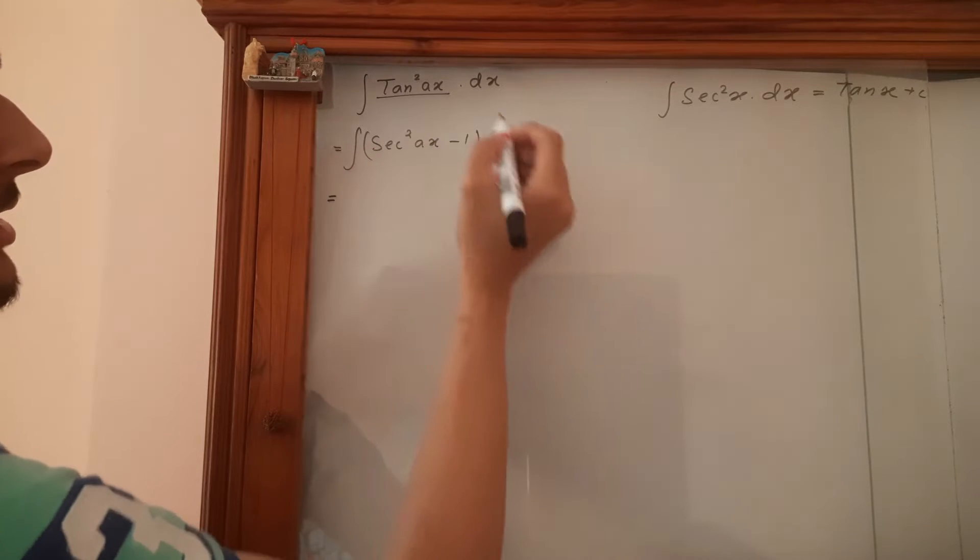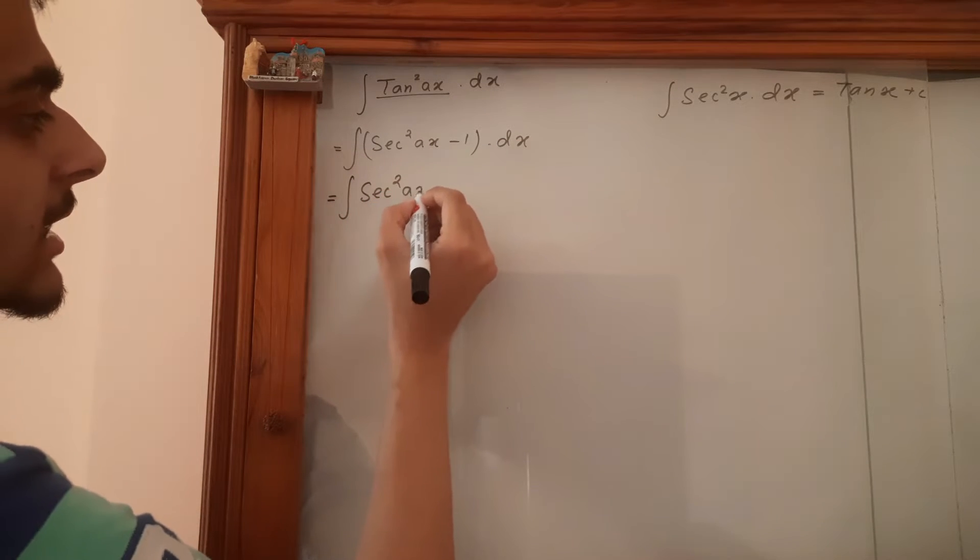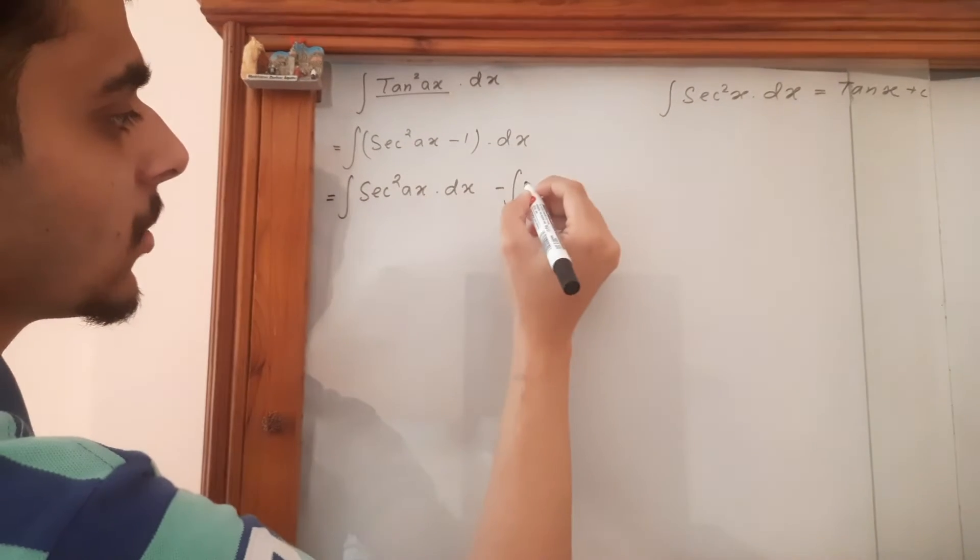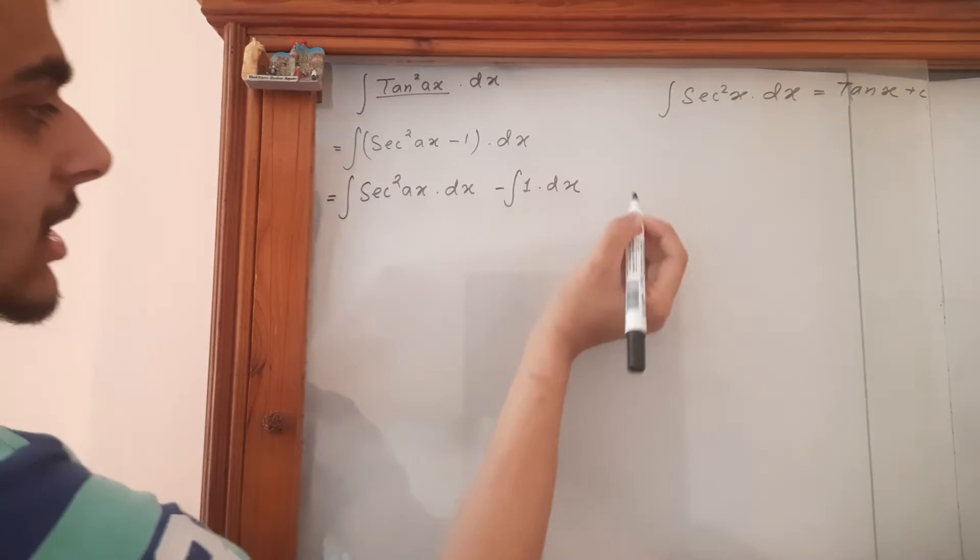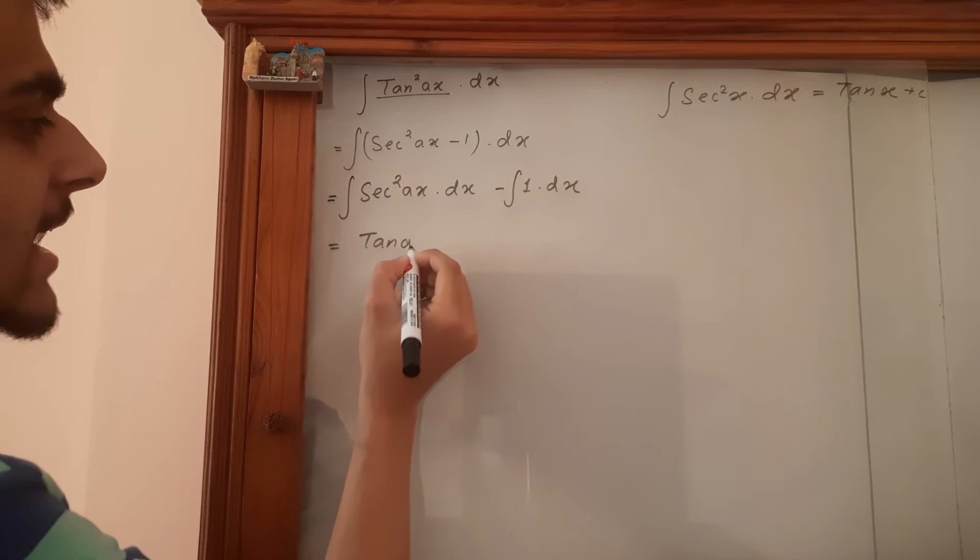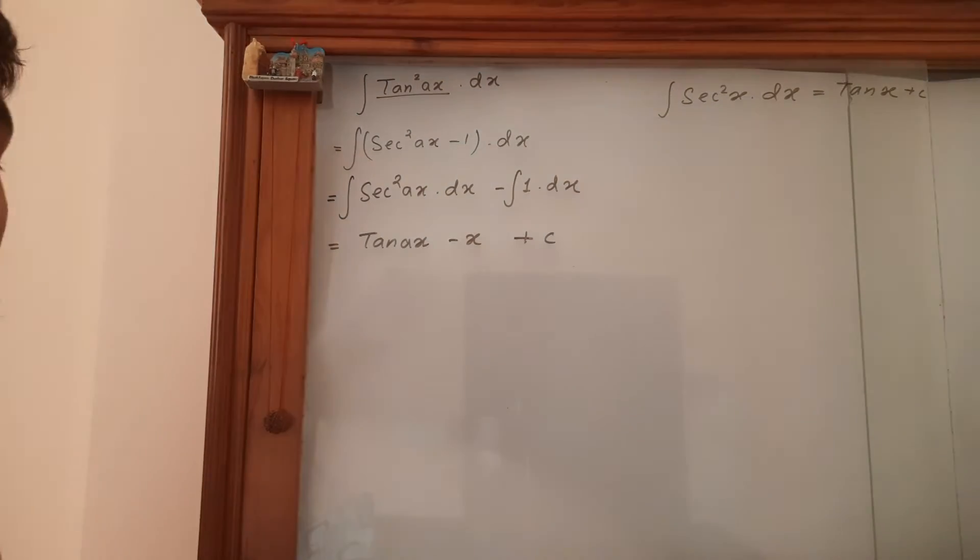So let's separate them into different integrals. So integral of sec square ax dx minus integral of 1 dx. So this becomes tan ax. This becomes minus x plus the integration constant.